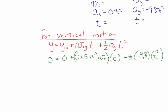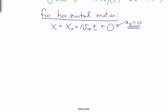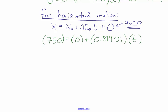Next, for the horizontal motion, the position as a function of time is x = x0 + vx·t. The one-half·a·t² term is zero because horizontal acceleration is always zero with no air resistance. Plugging in our horizontal values: 750 = 0 + 0.819·v0·t.